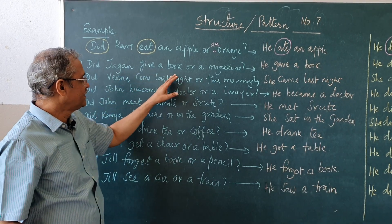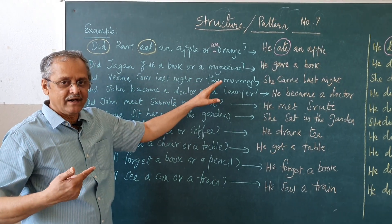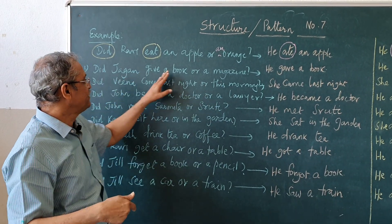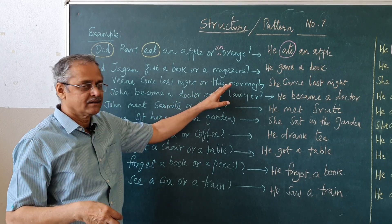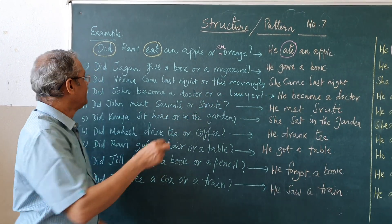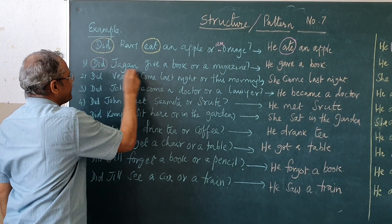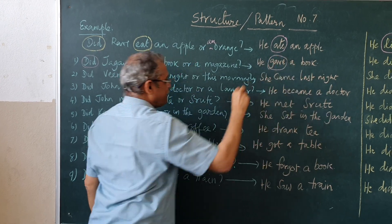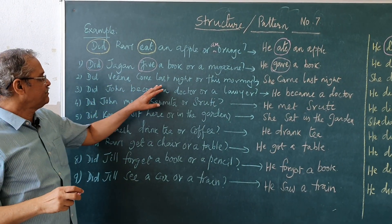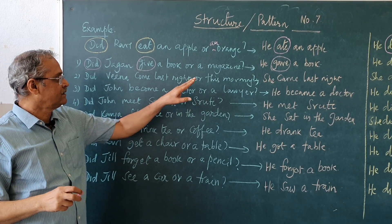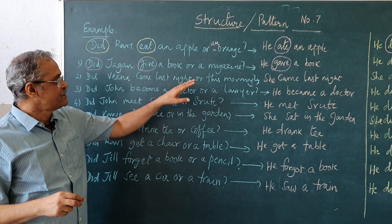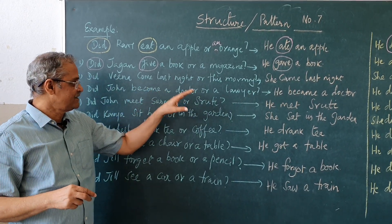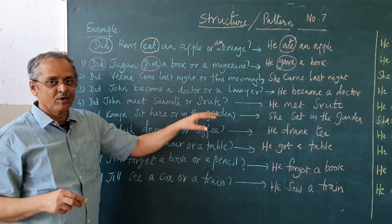Did Jagan give a book or a magazine? After I read I will give you some pause — you repeat that. Did Jagan give a book or a magazine? He gave a book. Again, you see here: 'did give' becomes 'gave.' Did Veena come last night or this morning? She came last night.